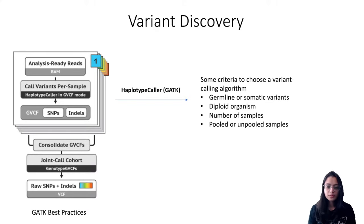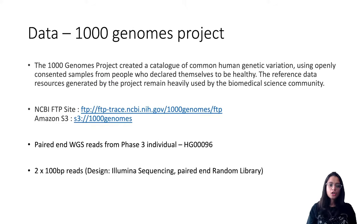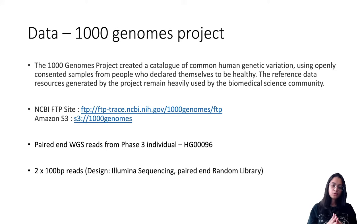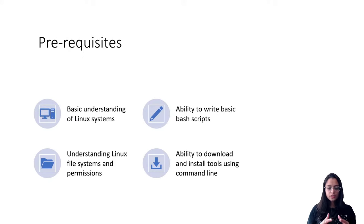HaplotypeCaller can handle multiple samples, but it is not recommended for more than 100 samples at a time. For today's demonstration, we are using data from the 1000 Genomes Project — an effort to produce an extensive catalog of human genetic variation to support future medical research. Genomes of over a thousand unidentified individuals from around the world were sequenced using next-generation sequencing technologies, and this data is publicly available. We are using paired-end whole genome sequencing reads from an individual who was part of phase three of this project.